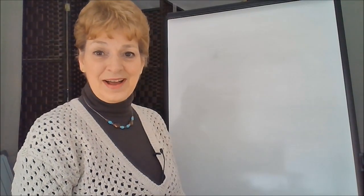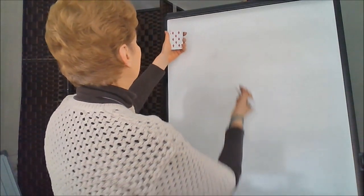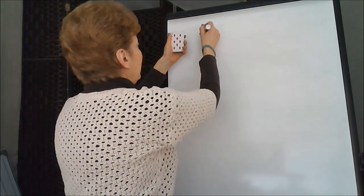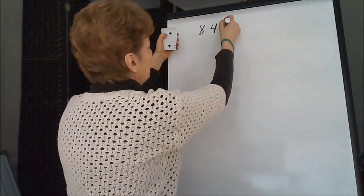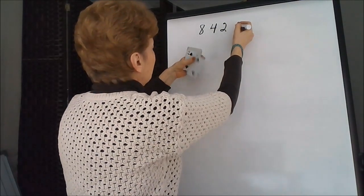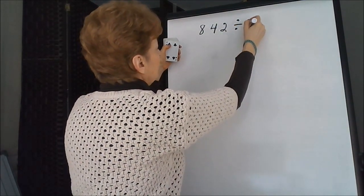Here's a variation on the box method. 842 divided by 4.